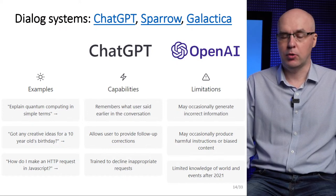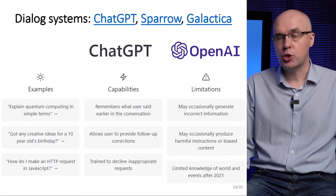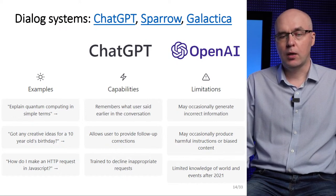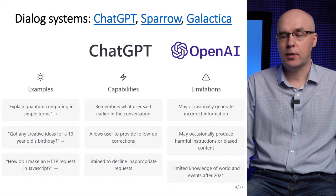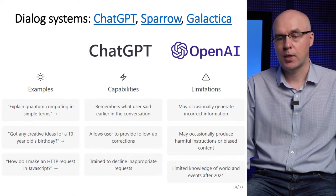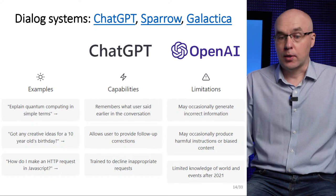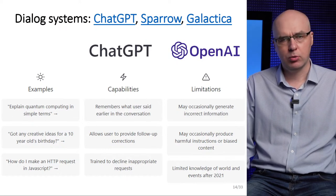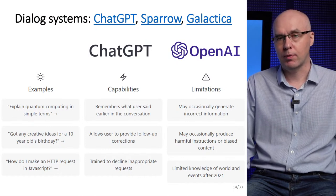The next example is dialogue systems and chatbots. The most famous chatbot is ChatGPT from OpenAI, which appeared on November 30, 2022. This model is based on the GPT decoder model. Immediately after its introduction, ChatGPT had a resounding effect in the media space. The model can remember what users said earlier in the conversation, allow users to provide follow-up corrections, and decline inappropriate requests. But ChatGPT also has limitations: it may generate incorrect information, so don't rely too much on its answers; it may produce harmful instructions or biased content; and it knows nothing about events after 2021.